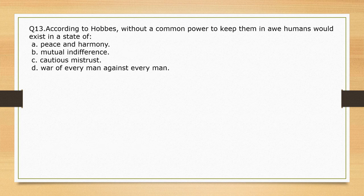According to Hobbes, without a common power to keep them all in check, people would exist in a state of — options: peace and harmony; mutual indifference; cautious mistrust; war of every man against every man. The correct option is option D: war of every man against every man.